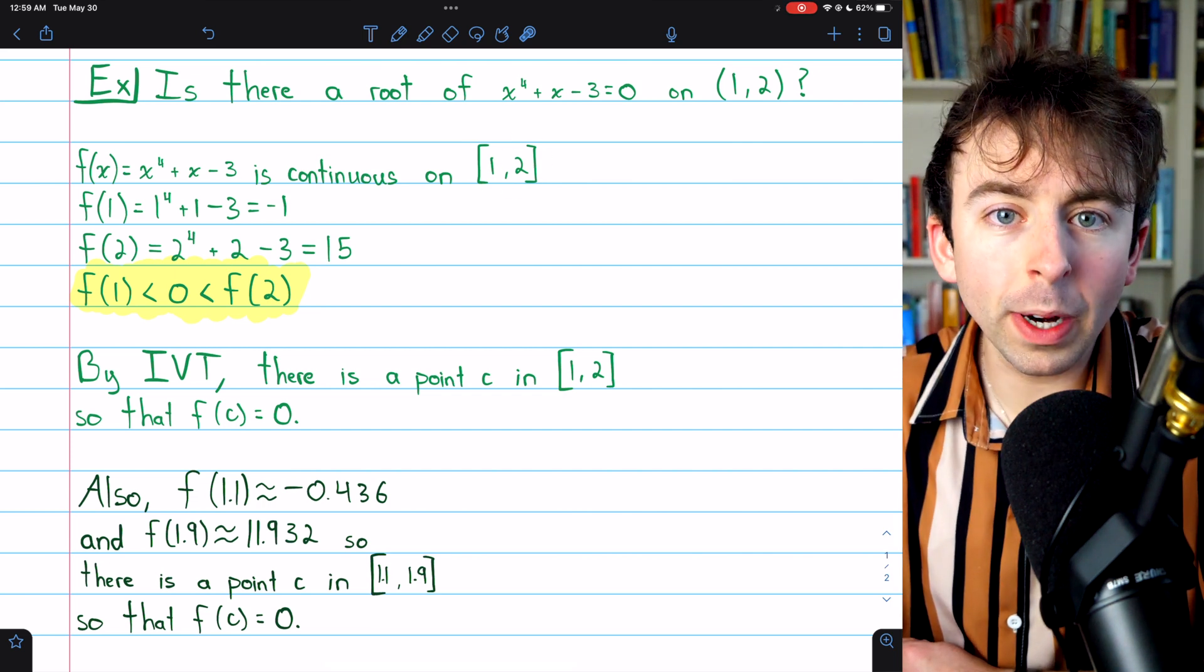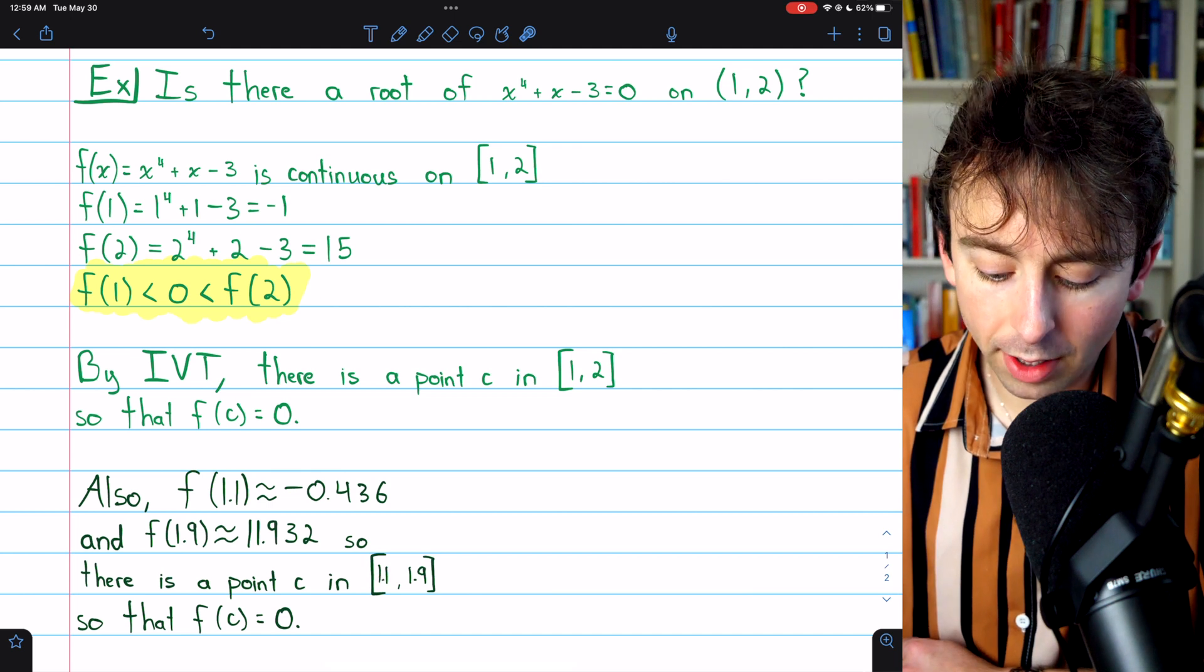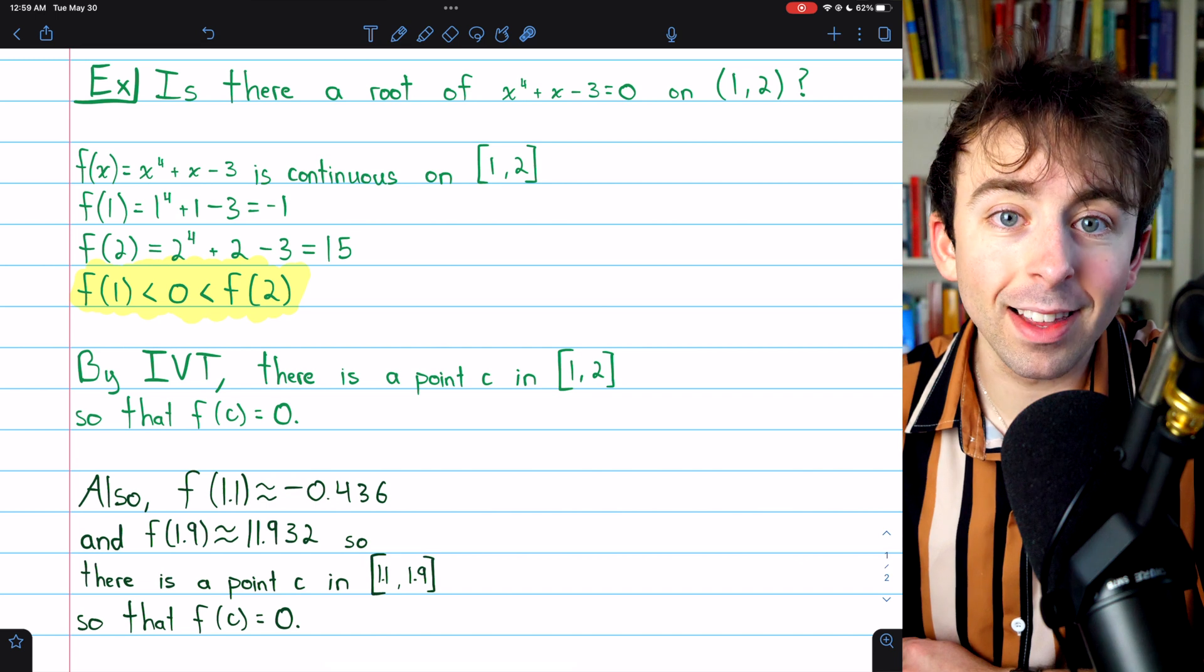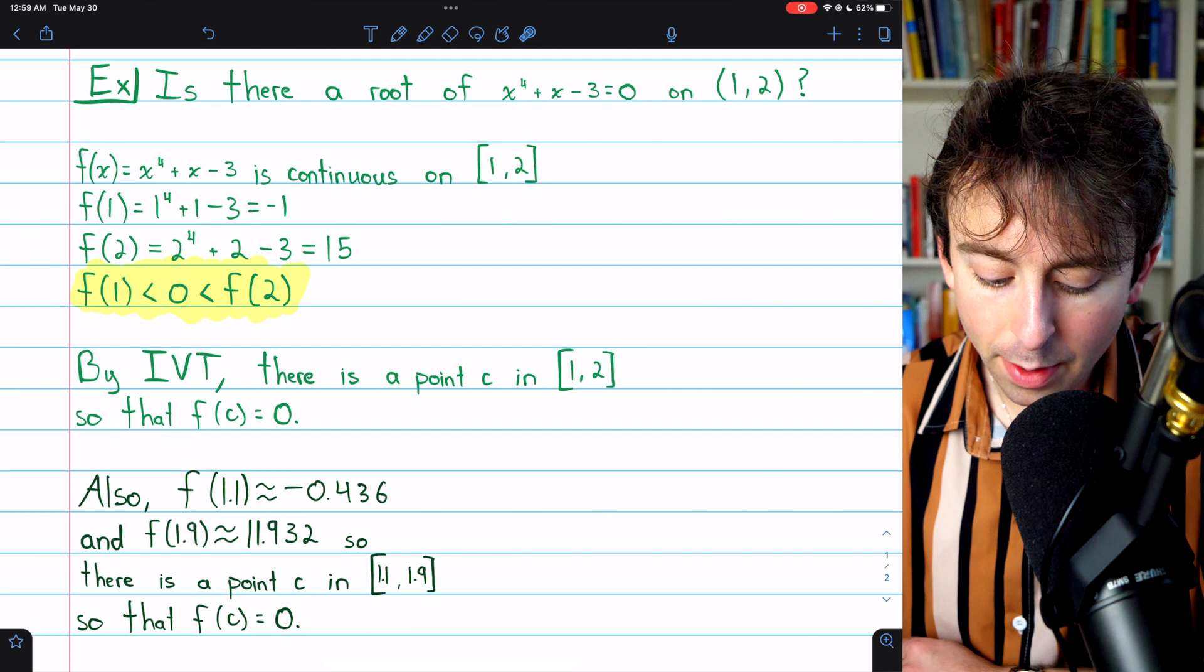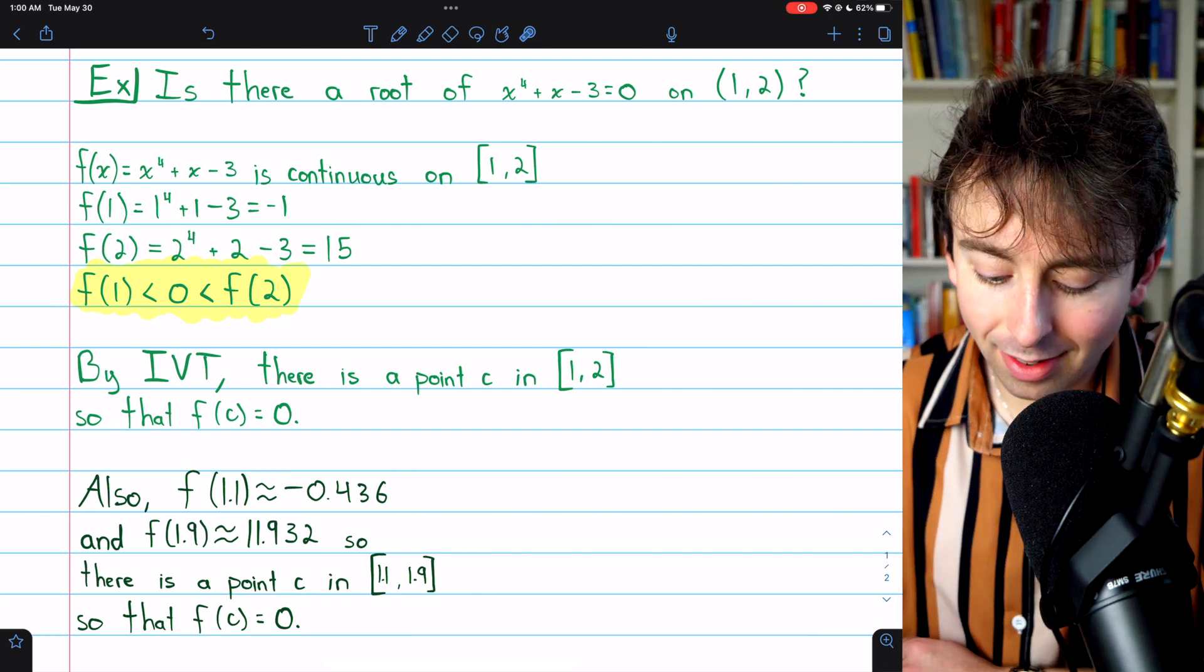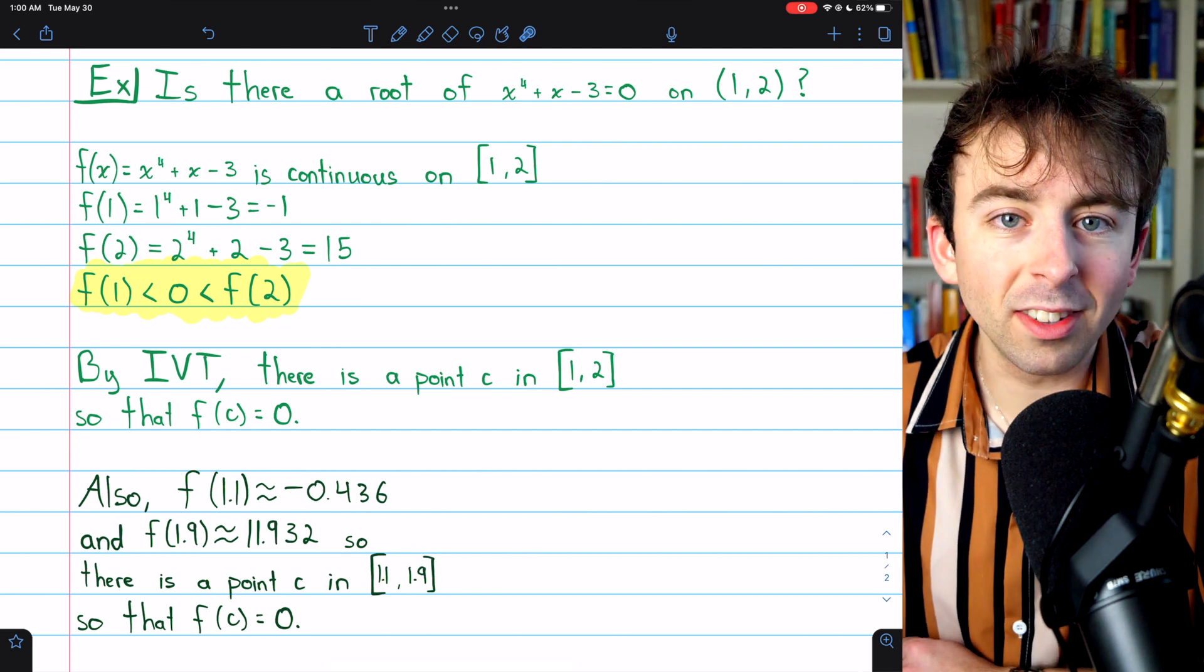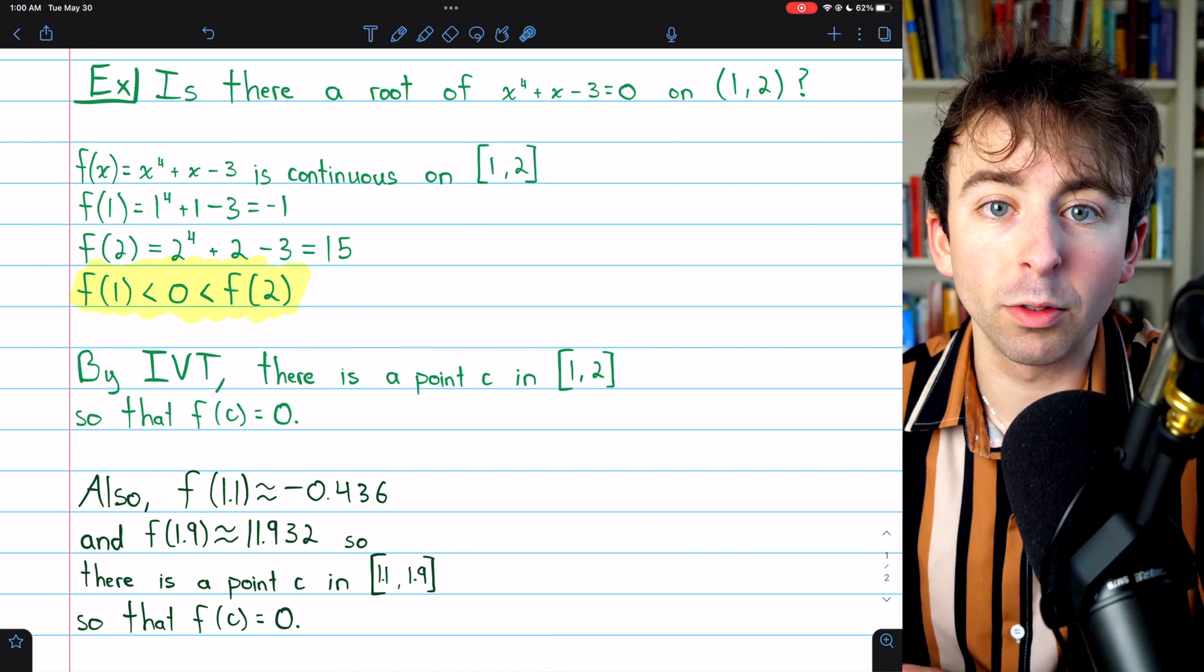We were looking at the closed interval [1,2], but we could also shrink the interval a little bit and think about the interval [1.1, 1.9]. The function is also continuous on this closed interval, and we find that the starting value on this interval is negative. The ending value is positive. So again, there must be a point c in this interval such that f(c) = 0. So we have narrowed our range in looking for this root.